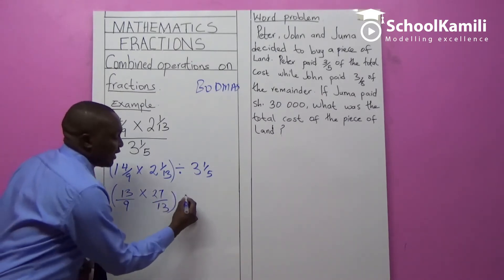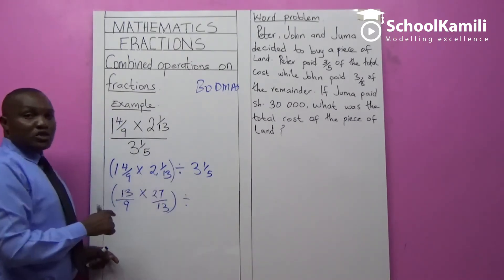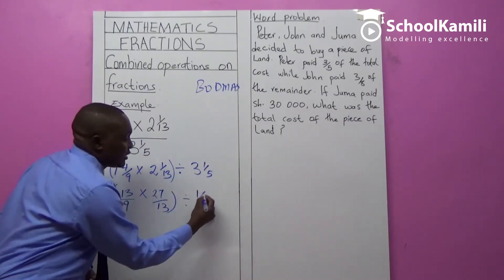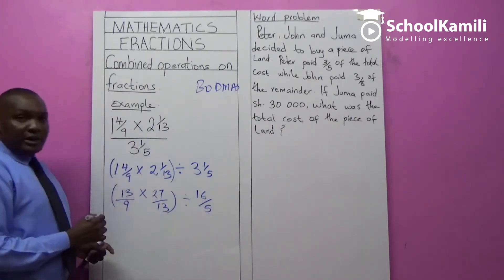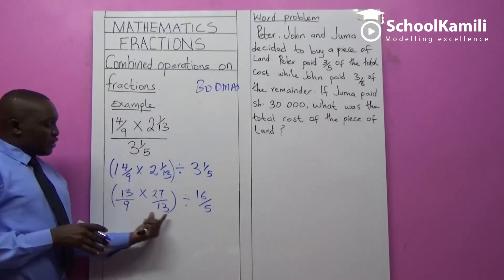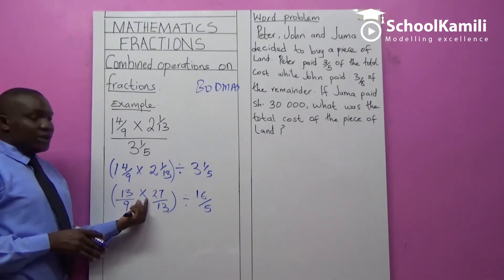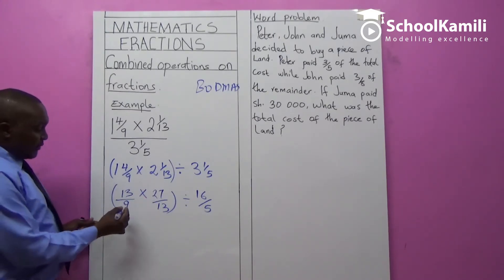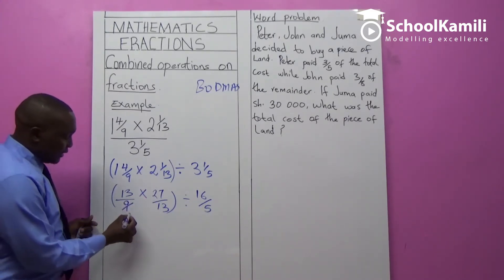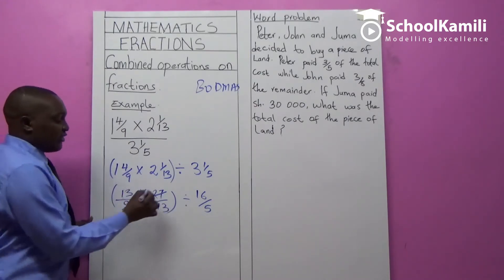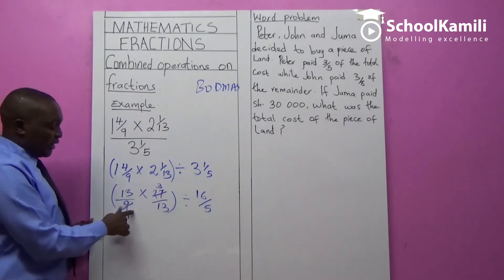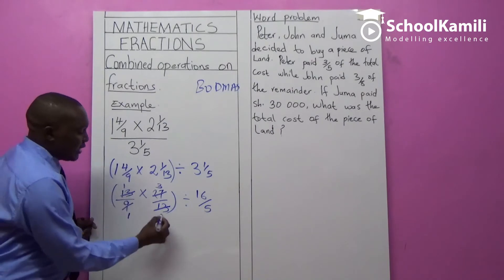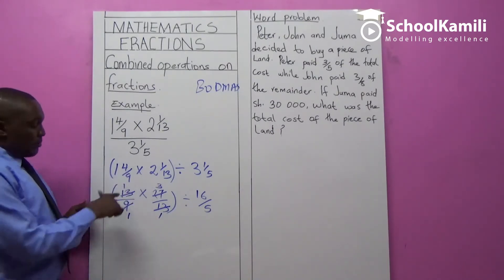This is what's in the bracket. Then divide by 3 and 1 fifth — change that into improper fraction: 3 × 5 = 15 plus 1, giving 16 over 5. In between the two improper fractions we have a multiplication sign, which means you can simplify. 9 goes into 27 three times, and the 13 and 13 cancel to give 1 and 1.